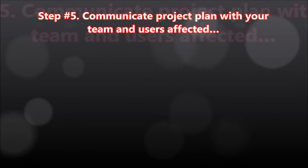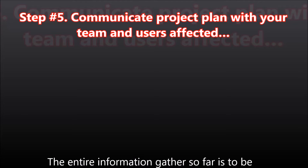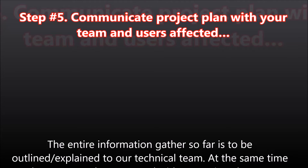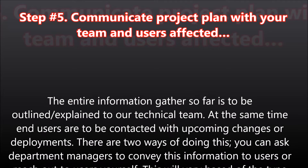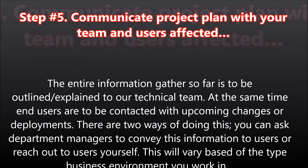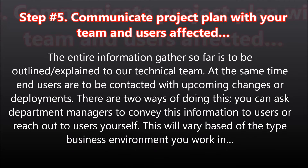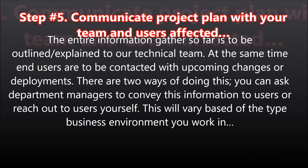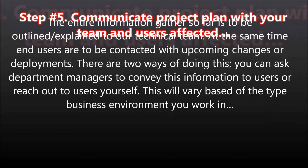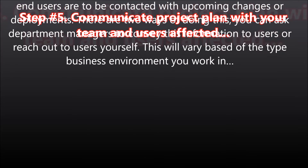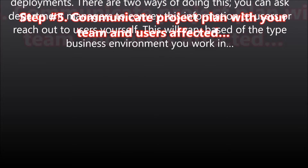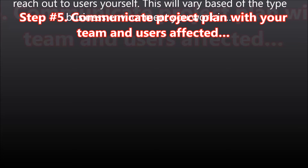Step number five: communicate the project plan with your team and the users affected. All the information gathered so far is to be outlined and explained to our technical team. At the same time, end users are to be contacted about upcoming changes or deployments. There are two ways of doing this: you can ask department managers to convey this information to users, or reach out to users yourself. This will vary based on the type of business environment you work in.